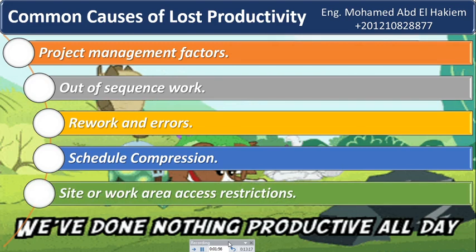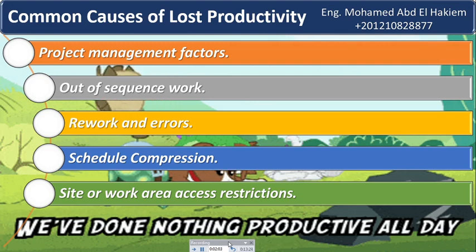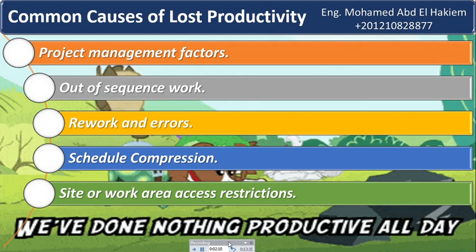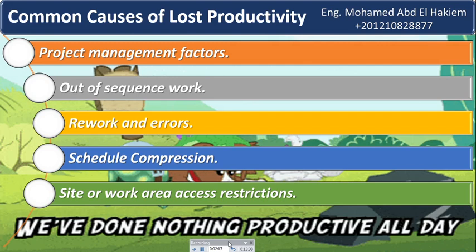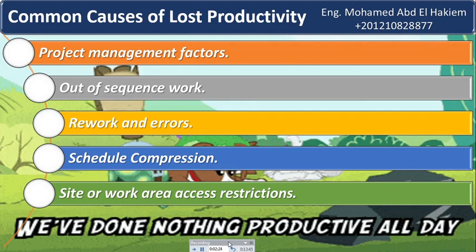Twenty-three: site or work area access restrictions. If a work site is remote, difficult to get to, or has inefficient or limited access, productivity may suffer because labor, equipment, and materials may not be on site when needed. Additionally, productivity losses may occur when access to work areas is delayed and the contractor is required to do more work in a shorter period of time, which may result in overmanning, dilution of supervision, and lack of coordination of the trades.